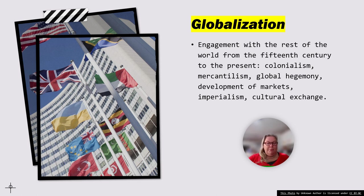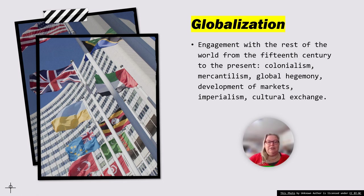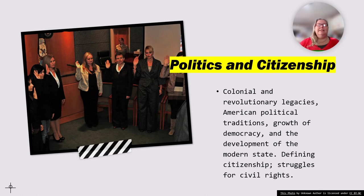Politics and citizenship: our form of government is unique in that it was the first time a constitutional republic had ever been tried — prior to our great experiment, every government was ruled by a monarch. Since our founding, many other governments have based their form of government off of ours, making our unique form one of the most replicated in the world. Colonial and revolutionary legacies, American political traditions, growth of democracy, development of the modern state, defining citizenship, and struggles for civil rights all constitute our politics and citizenship.